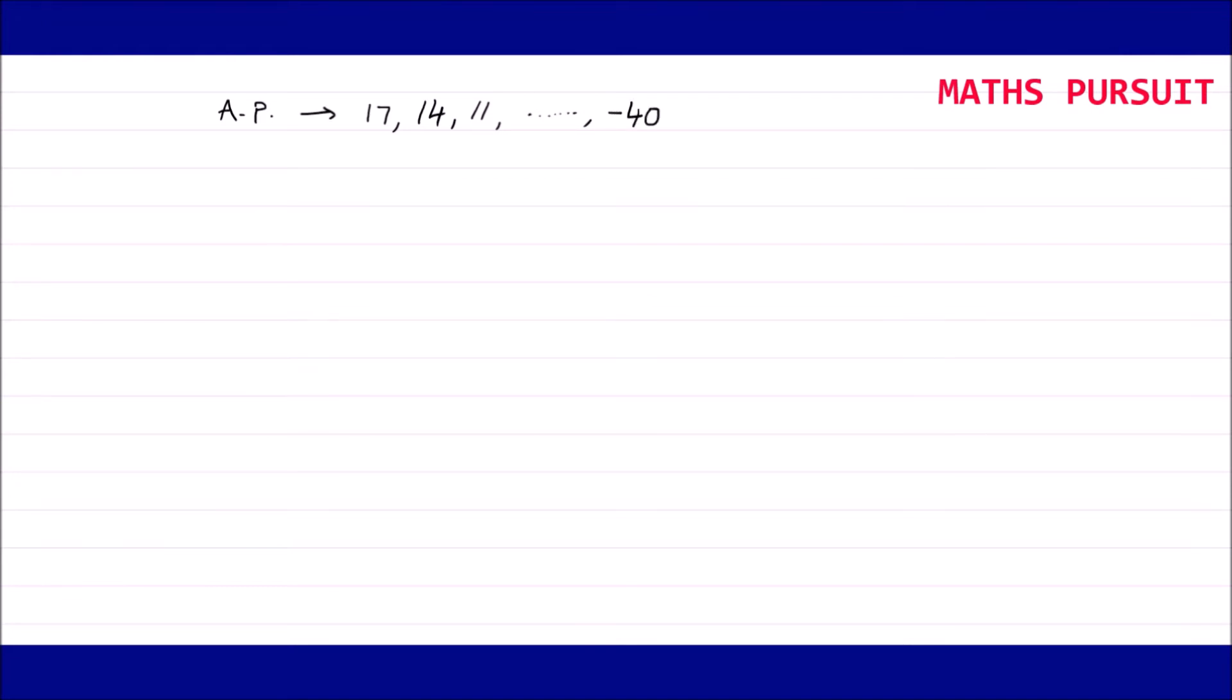The question wants us to find the sixth term of this A.P. from the end. That means from -40, from this -40, we need to find out the sixth term. What is that value? Let us start working out this type of problem where it is being asked to find out the term from the end.